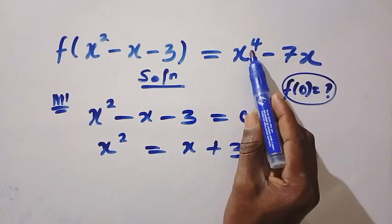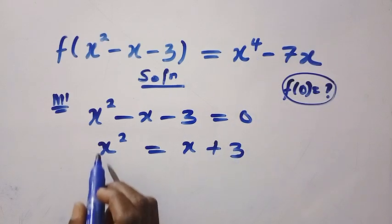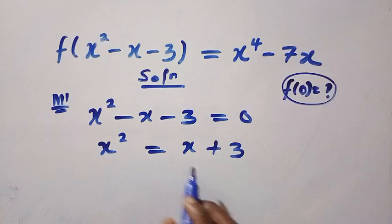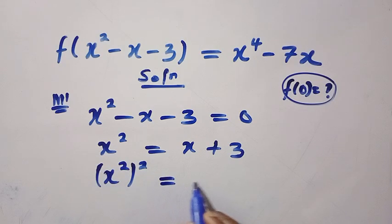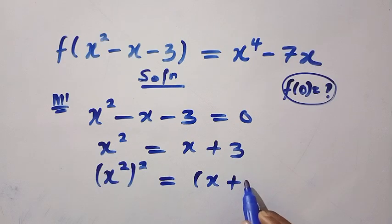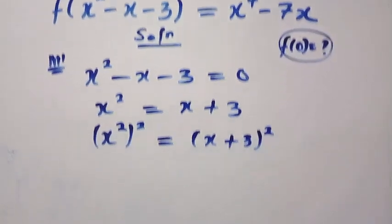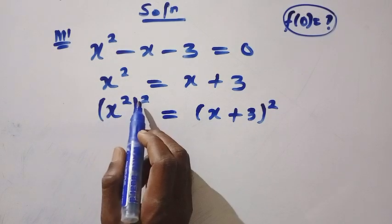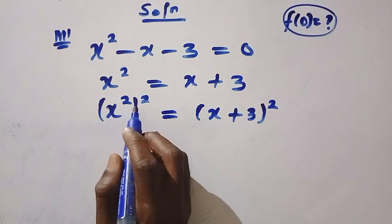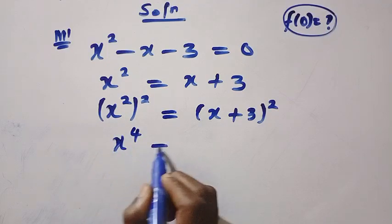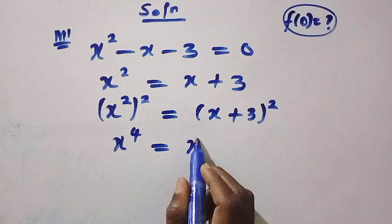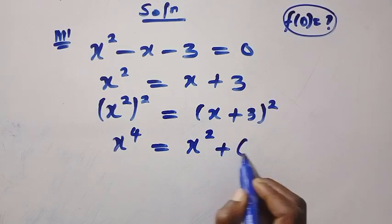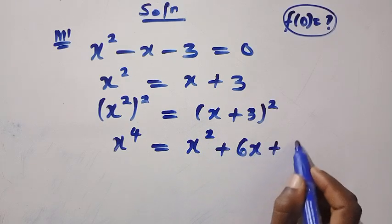Next, we need x to the power of 4. If I raise both sides of this equation by 2, we have x squared raised to the power of 2 equals x plus 3 raised to the power of 2. According to the rule of indices, we have x squared raised to the power of 2 as x to the power of 4. This equals, by expanding x plus 3 squared, x squared plus 6x plus 9.